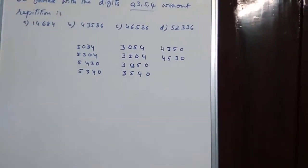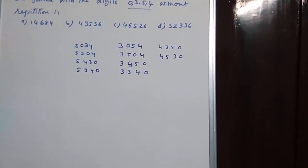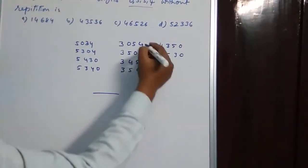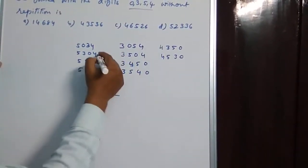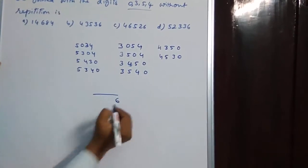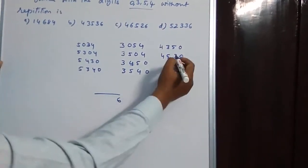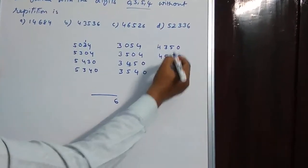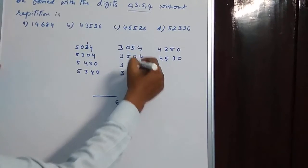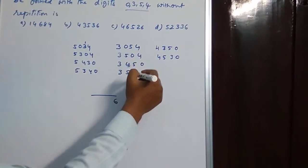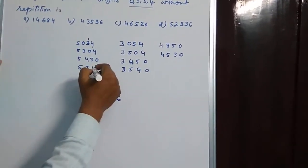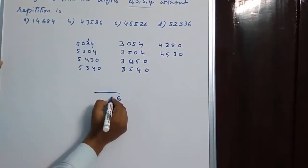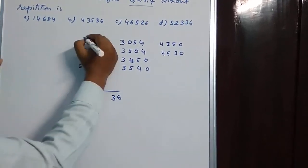Now we have to find the sum of all these numbers. We will find the sum: 0, 0, 8, 12 plus 4 is 16 — so 1 is carried. Then 5, 3, 8 plus 10 is 18, 22, 26, 29, 33 — so 3 is carried.